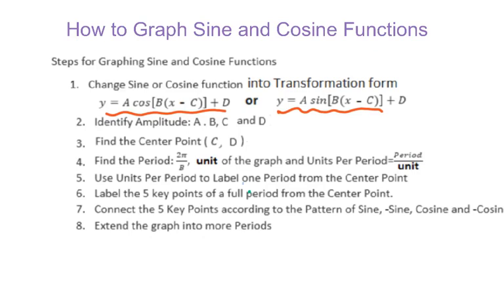Then you will identify A, B, C, and D so that you will find the new center point, that's C and D. Remember C is a liar, meaning it's always opposite of the given number.